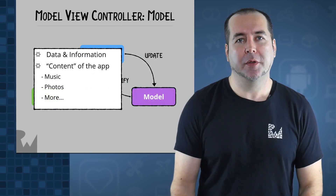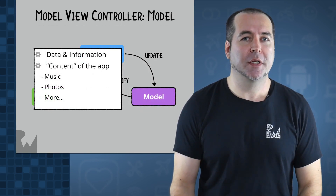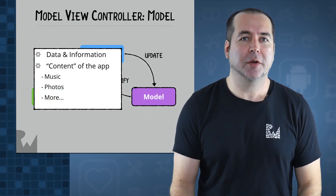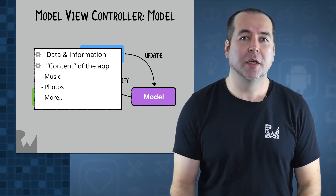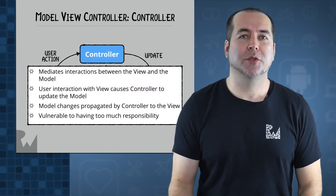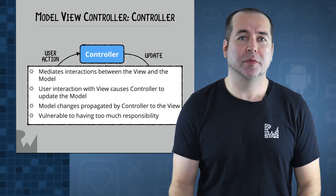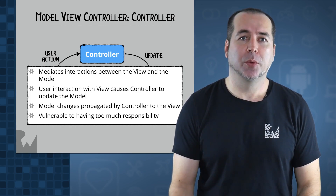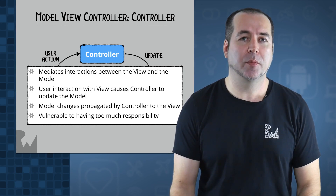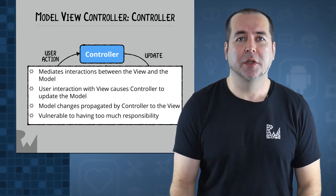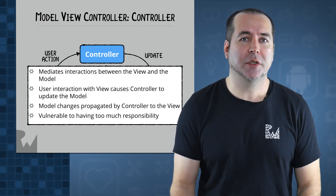You can think of the model layer as the data or information in the software. The model layer contains classes for creating the objects that form the content of your app, such as songs in a music app or photos in a photo app. The controller mediates interactions between the view and the model — the view shows app data to a user, and when the user interacts with the app, the controller updates the app data. Conversely, the controller propagates any changes that occur in the model layer to the view.